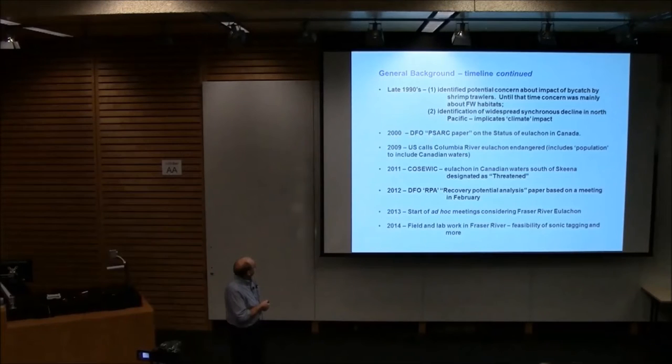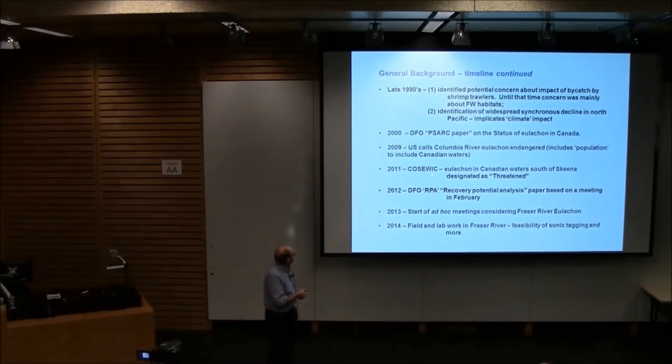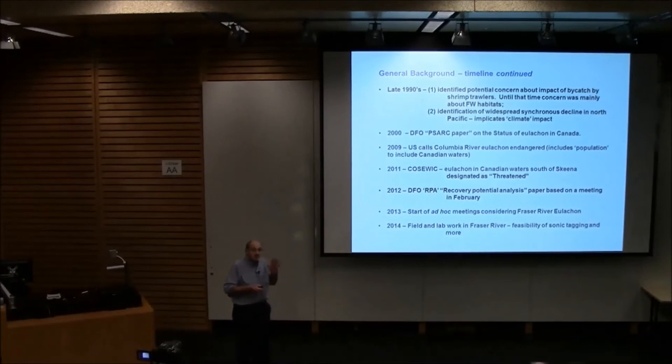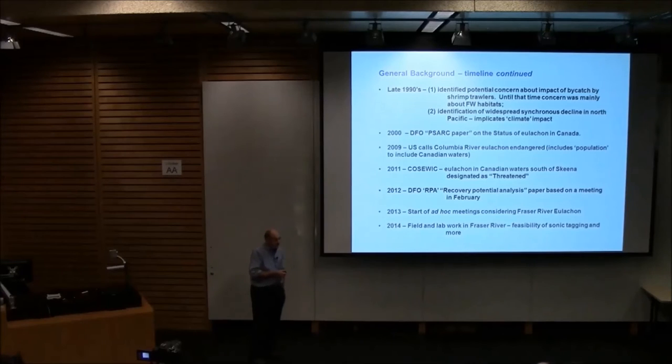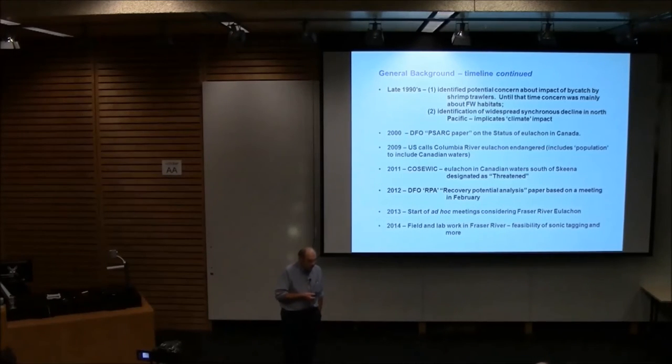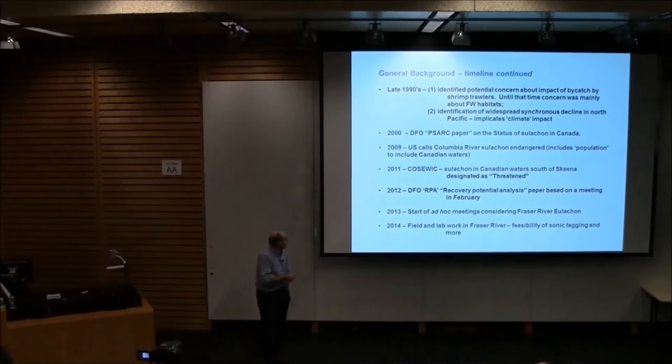In 2000, following all that, we wrote a PSARC paper on the status of Eulachons. In 2009, the US looked at the Columbia River and called it endangered. They got going faster than we did. In 2011, Megan Moody, a graduate of this institution, and I wrote a COSEWIC paper, and as a consequence it was called Threatened. In 2012, there's another paper called the Recovery Potential Analysis. There's a small group including Vancouver City Police, Vancouver Parks, Rick Hansen Society, and Port Metro Vancouver that got together saying, can we do something about Eulachons in the Fraser River?